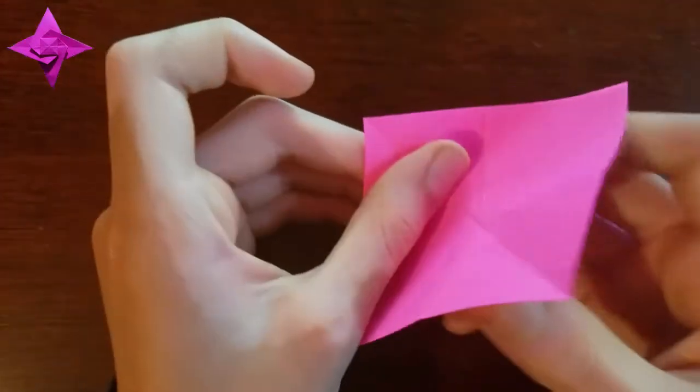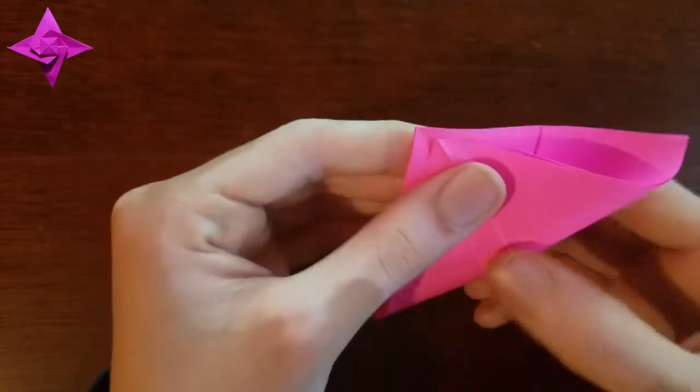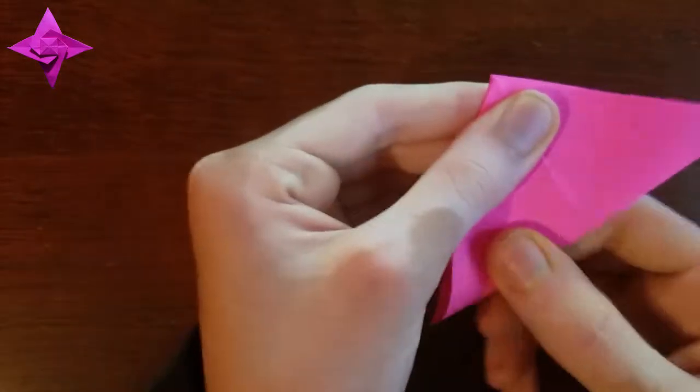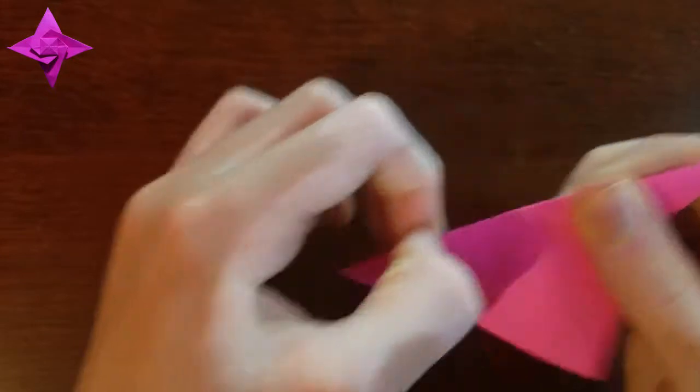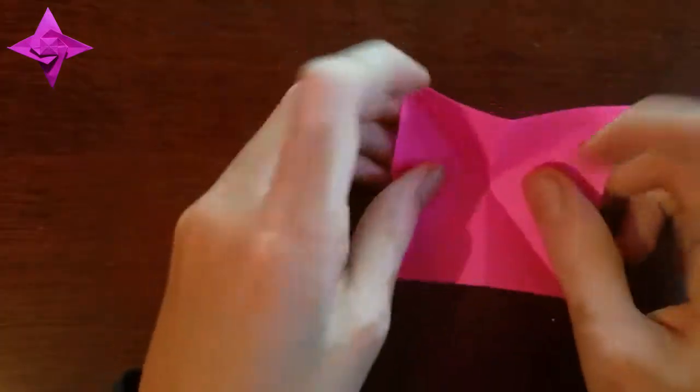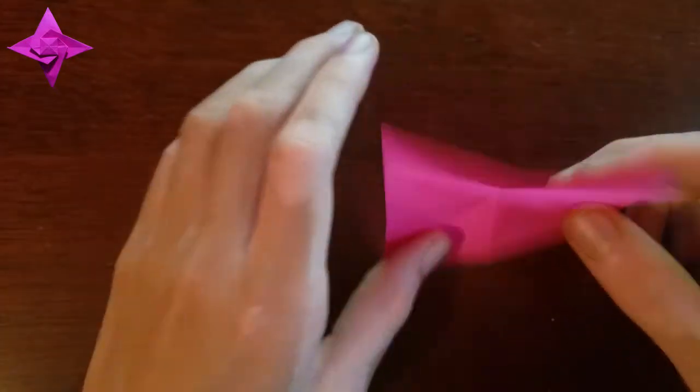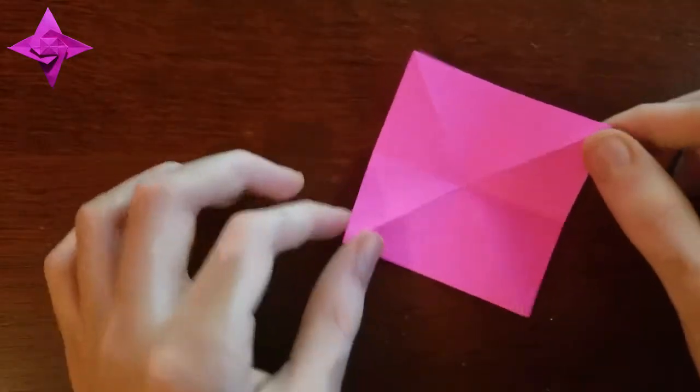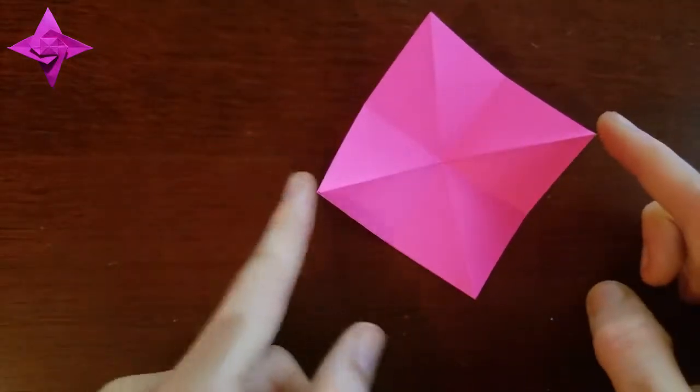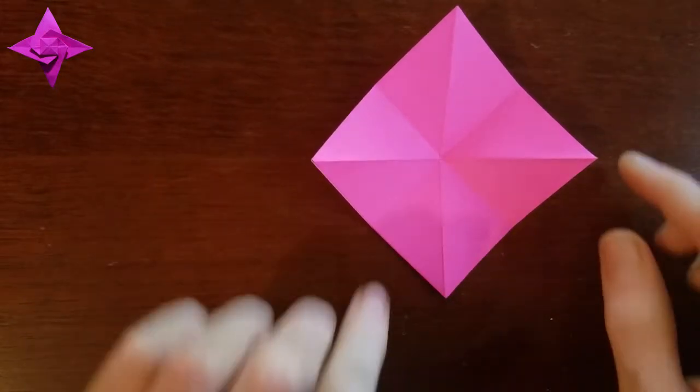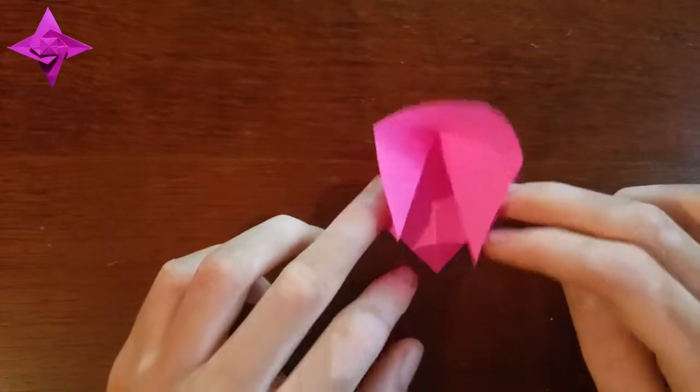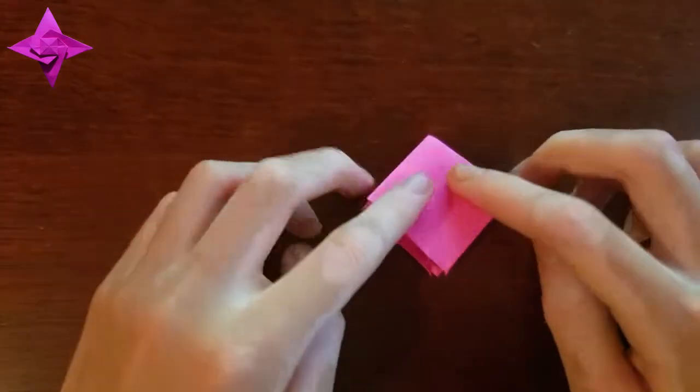And the other one, unfold, and then we're just gonna collapse the square base by taking these two corners and bringing it to here and it will kind of just naturally form and then push this down. So all four corners are at the bottom.